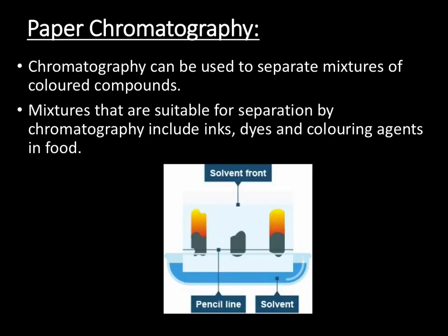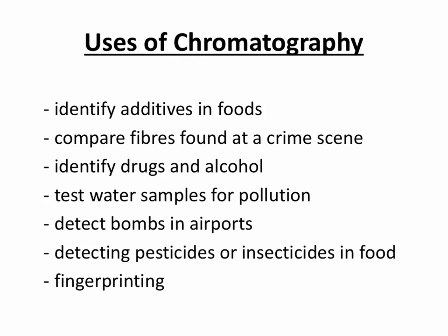Our final separation technique is paper chromatography. Chromatography can be used to separate mixtures of coloured compounds, including inks, dyes, and colouring agents found in food. Chromatography has a wide variety of uses: it can be used to find what additives might be in food, in forensics, to look at drugs and alcohol in someone's system, to examine water samples for pollution, to detect bombs in airports, and to look at fingerprinting in forensic science.